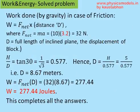Now we can calculate the work done. The work done by gravity in case of friction is force times distance traveled in the direction of the force. F_net itself is ma. That's 10 kg times acceleration of 3.2 in the case of friction, so that becomes 32 Newtons.